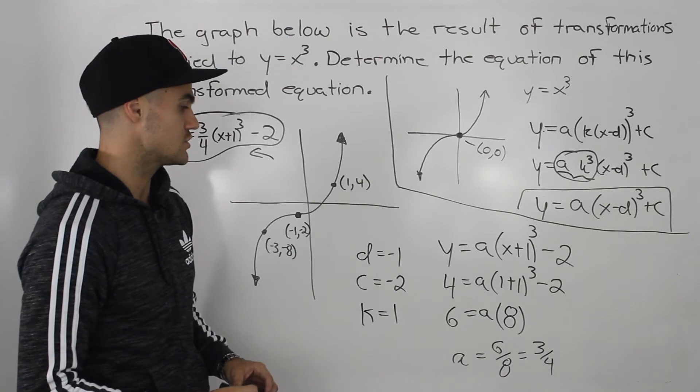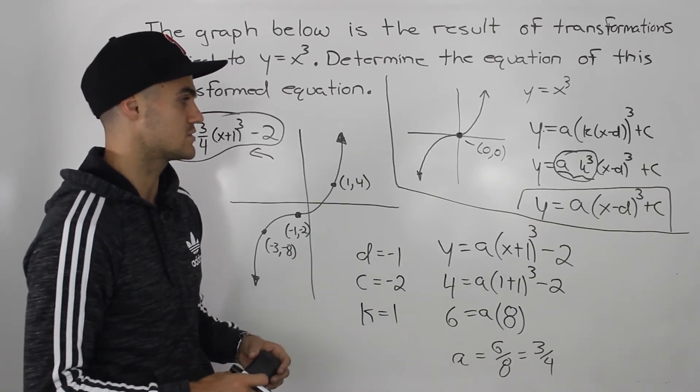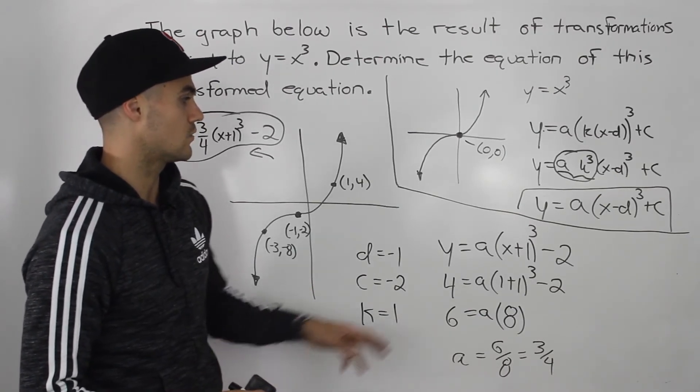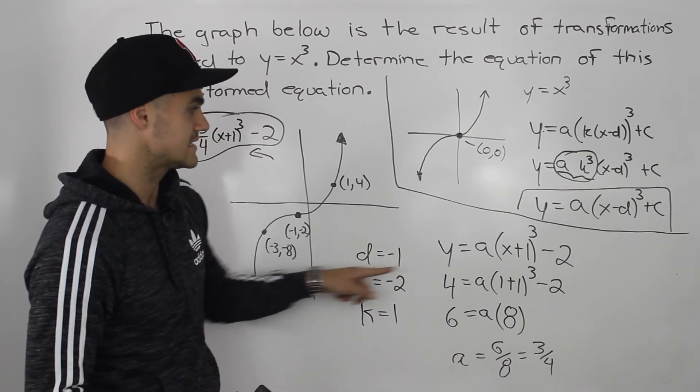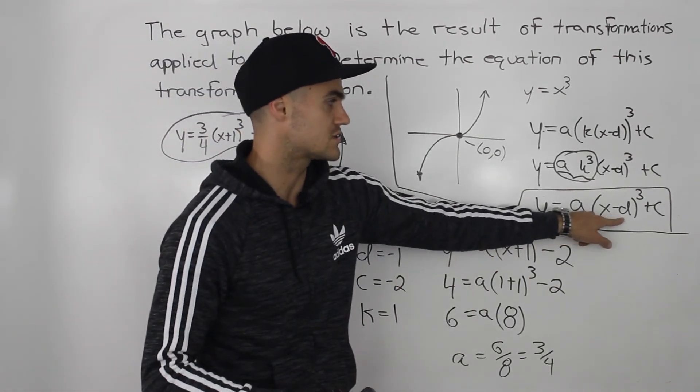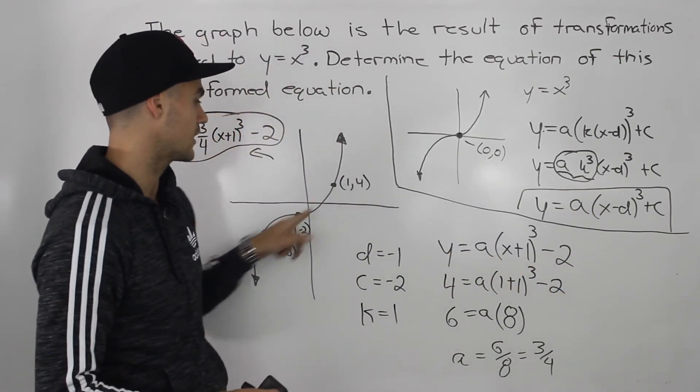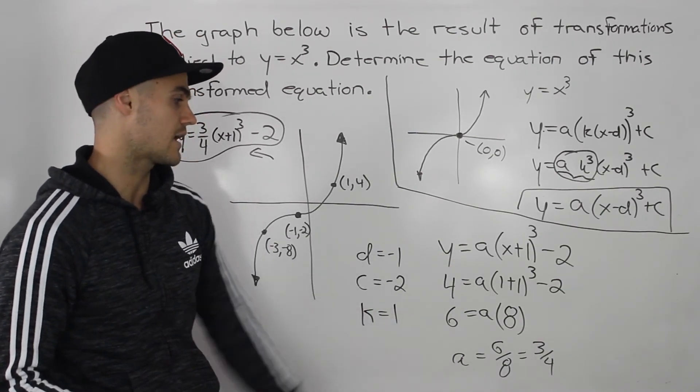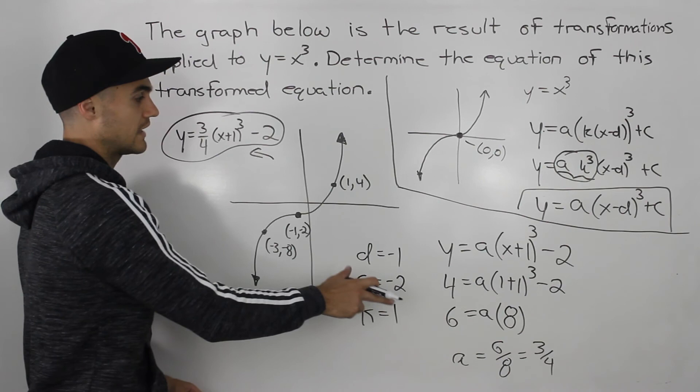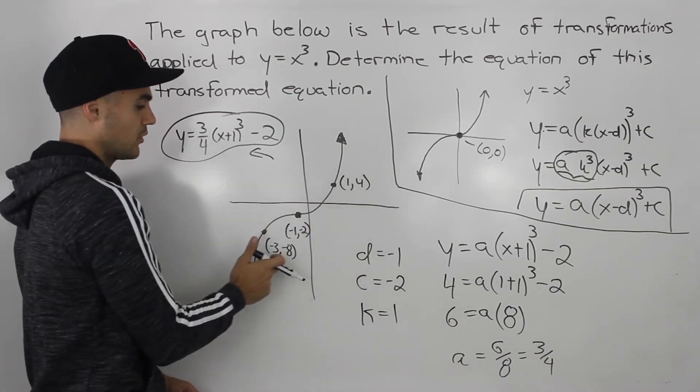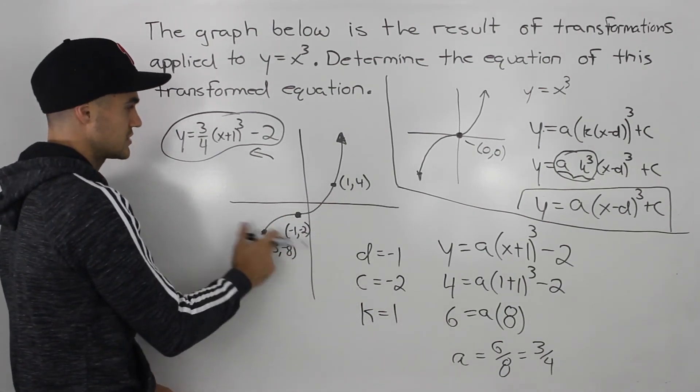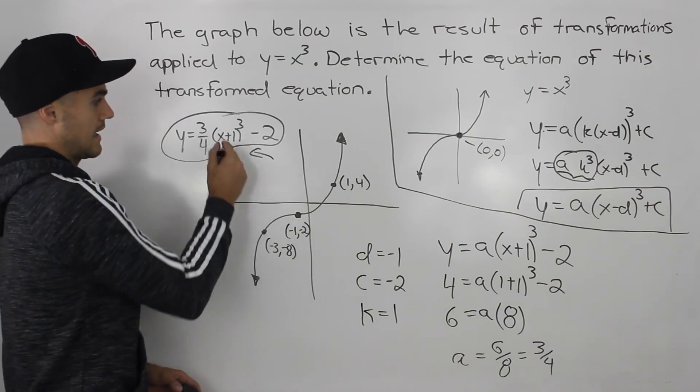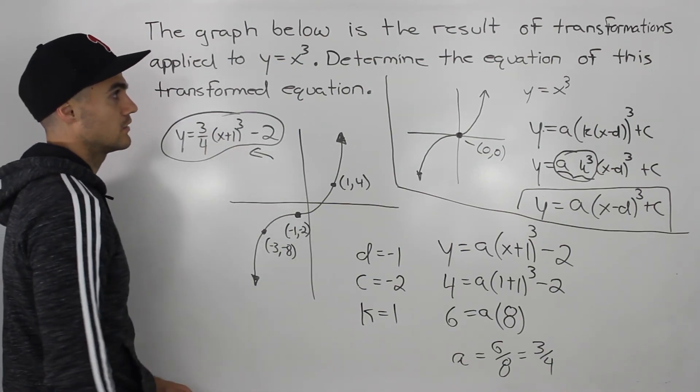And that makes our life a lot easier. There's one less constant to find. So once you plug in that d and c value into this general transformation format, you could plug in one of the other points to solve for the a value. In this case, we've got an a value of 3 over 4. You would get 3 over 4 whether you use this point or that point. You could try it yourself with this point. And that ends up being our final equation.